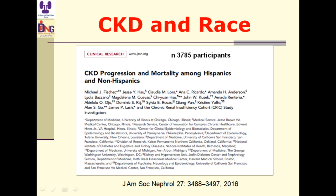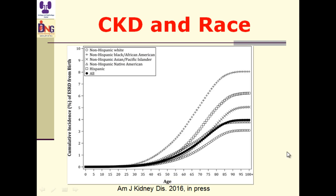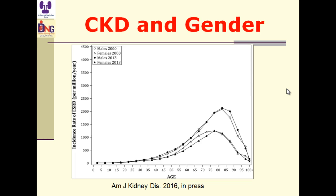Regarding race: a study including 3,700 persons compared CKD progression and mortality among Hispanics and non-Hispanics. CKD progression in Hispanics is comparable to non-Hispanic Black individuals but significantly higher than non-Hispanic White individuals. Mortality in Hispanics is relatively higher than non-Hispanics. Another study shows that in the Asian and Pacific Islander race, the cumulative incidence of end-stage kidney disease is more frequent. So race is a factor in CKD progression.